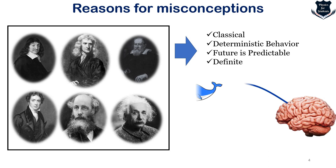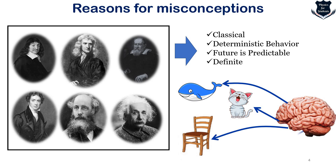This means that our brain perceives notions: a fish to be a fish, a cat to be a cat, a chair to be a chair and a coffee mug to be a coffee mug. There is no dilemma, no ambiguity in terms of classical determinism — a future that is predictable and everything which is definite. The problem comes as soon as our brain doesn't perceive something definite, and all the misconceptions arise.